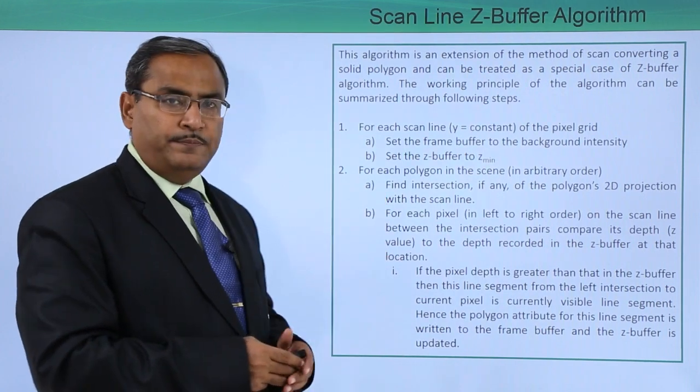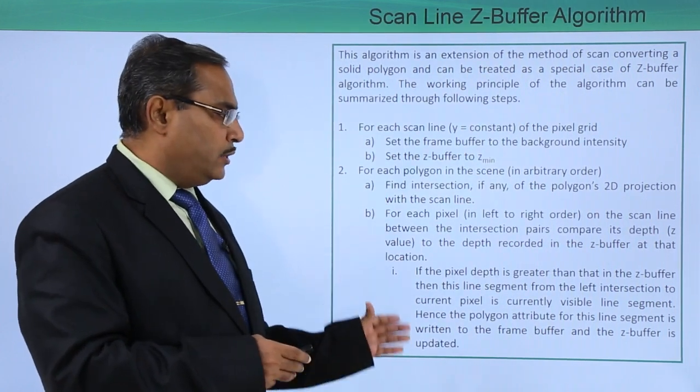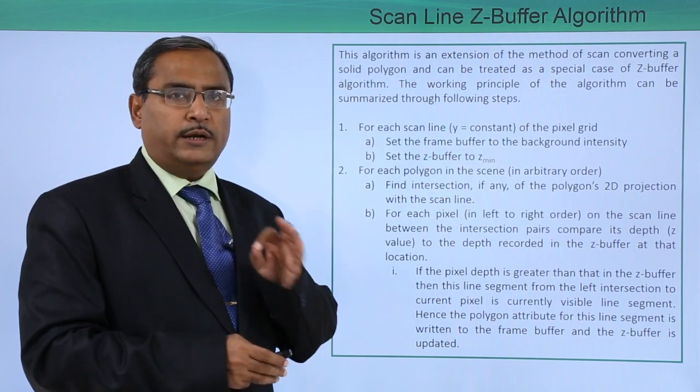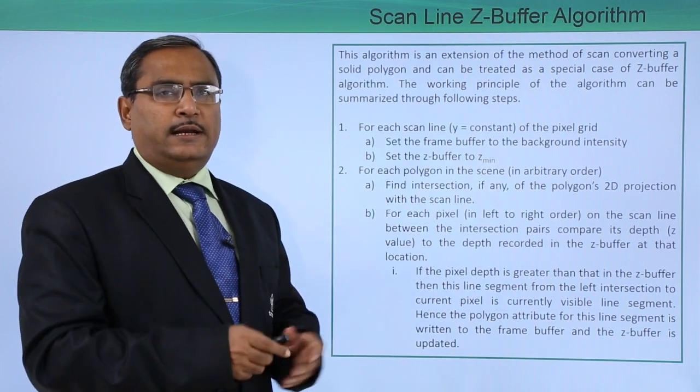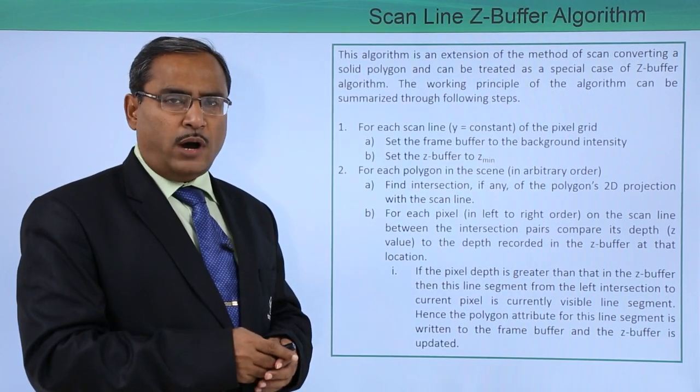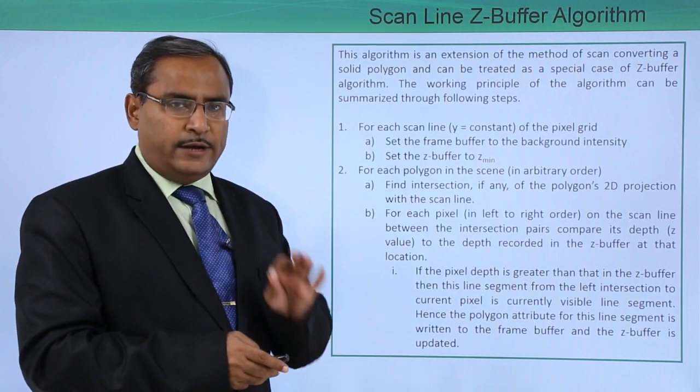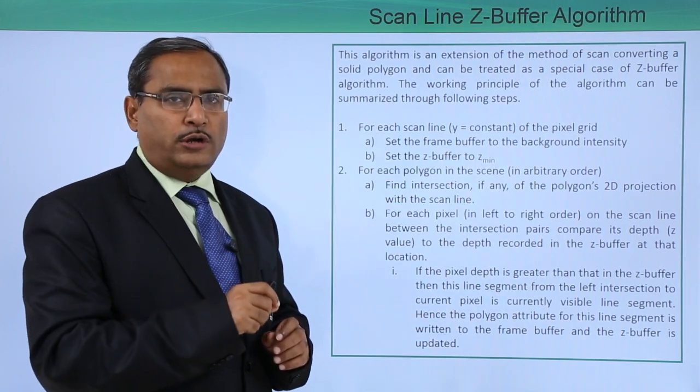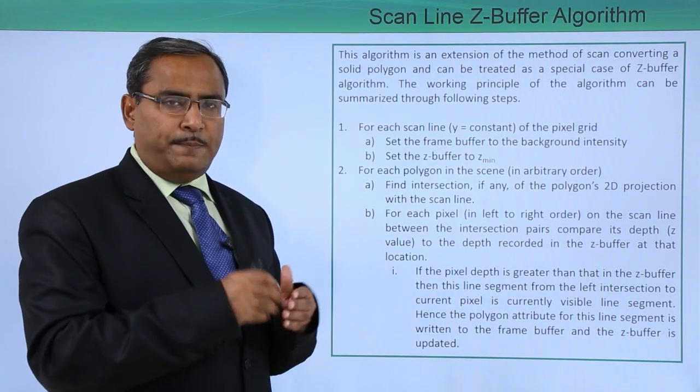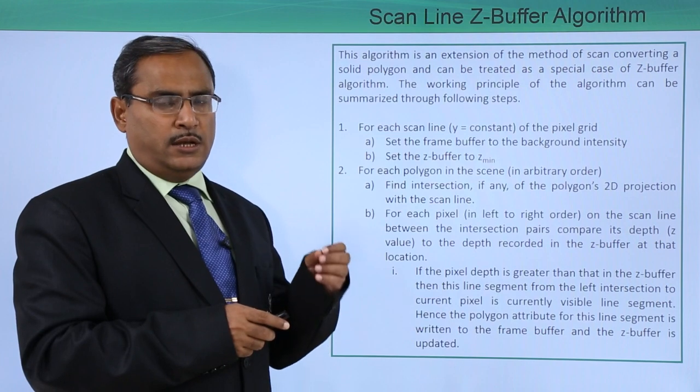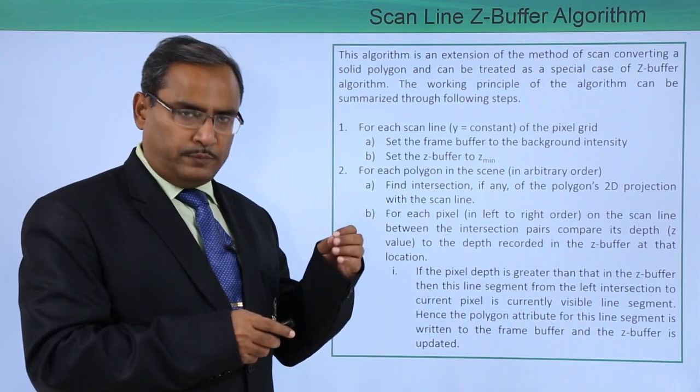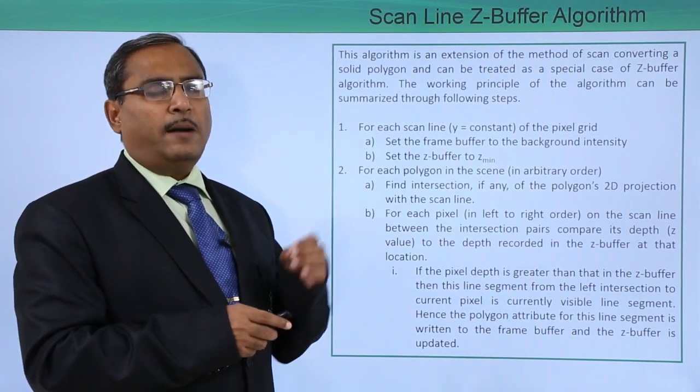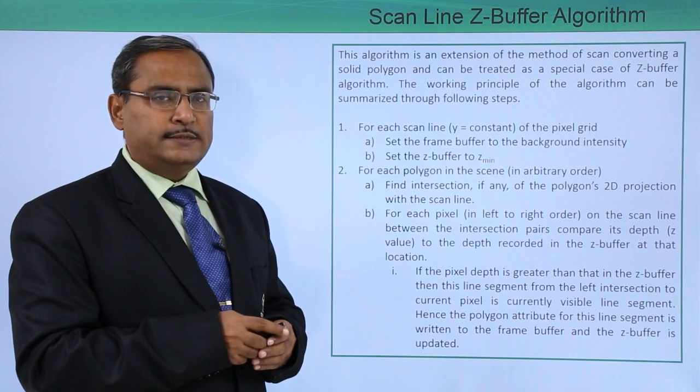In this algorithm, we always check where we are having one scan line with constant y, and when this scan line is traversed from left to right, we check which polygon it is intersecting. Depending upon the value of the respective z of the polygon, we update the respective position in the z-buffer.